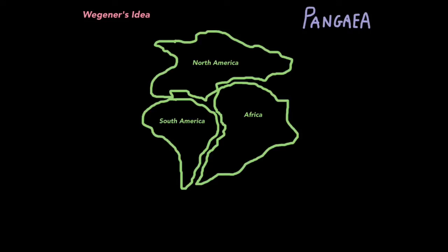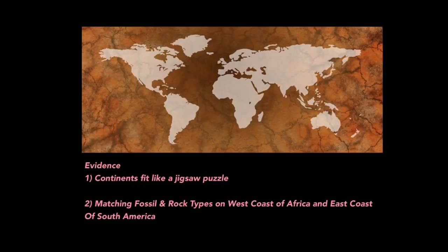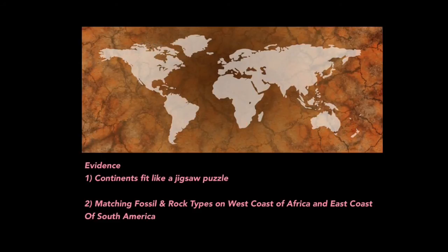Wegener's idea was that the Earth's landmass started off as one supercontinent called Pangaea, where all the continents were centralised and started off together. He proposed that over time they drifted apart. The evidence supporting continental drift comes firstly from the idea that the landmasses that make up the continents fit together like a jigsaw puzzle. The only reason they're not a perfect fit is because natural erosion has changed the landscape over time. It was also observed that there are matching fossil types and rock types on the west coast of Africa and the east coast of South America. What's more likely — that the same animals evolved independently on two different continents, or that the continents were once together where the animals evolved, then separated and got fossilised?